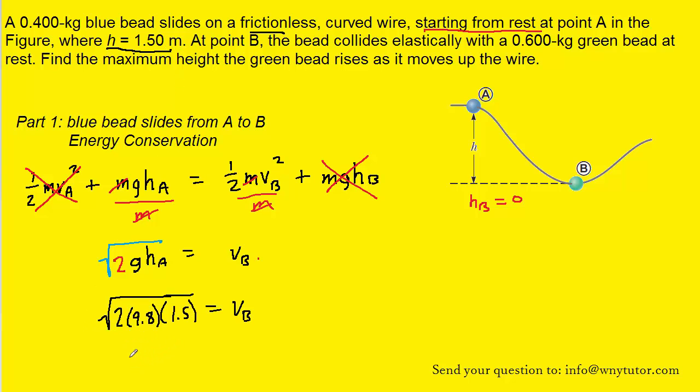And if we simplify that on our calculator, we should calculate approximately 5.42 meters per second. And that will be the speed of the blue bead once it travels down the wire to point B.